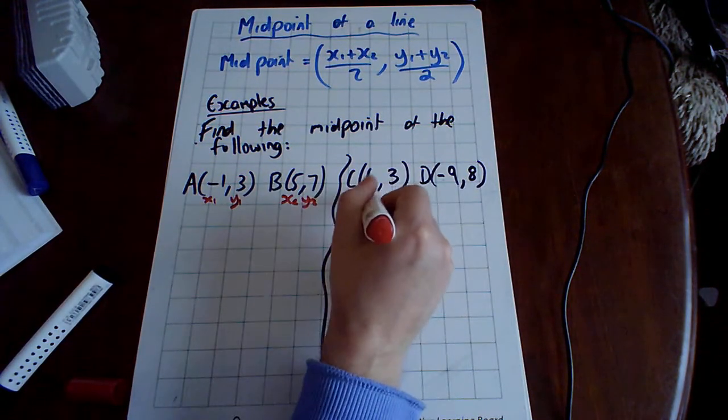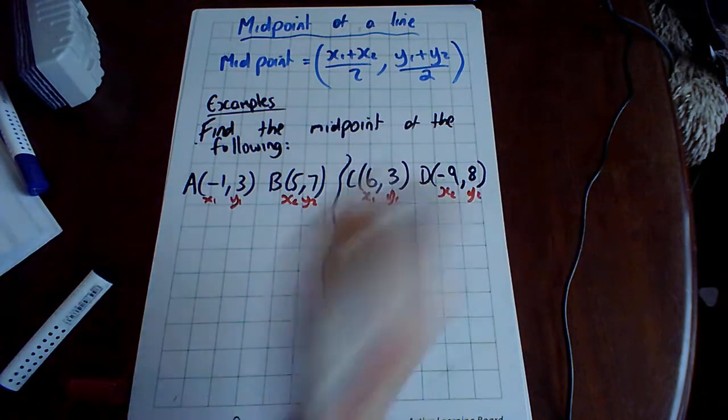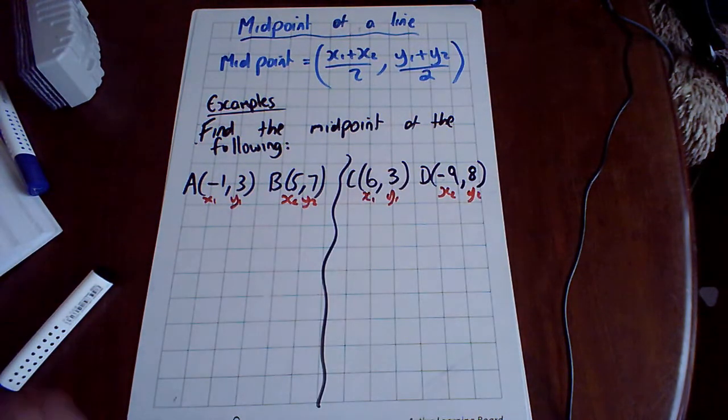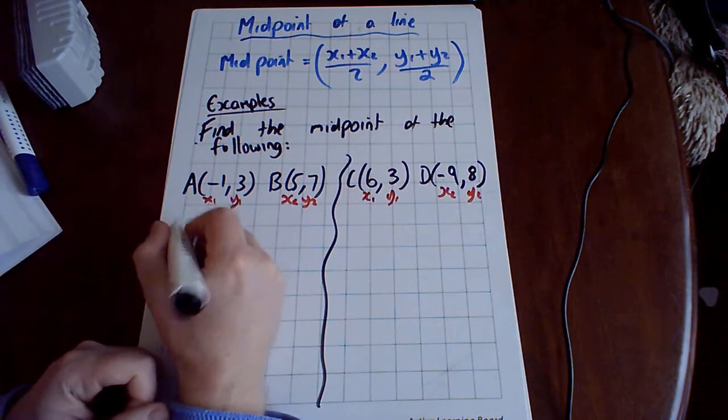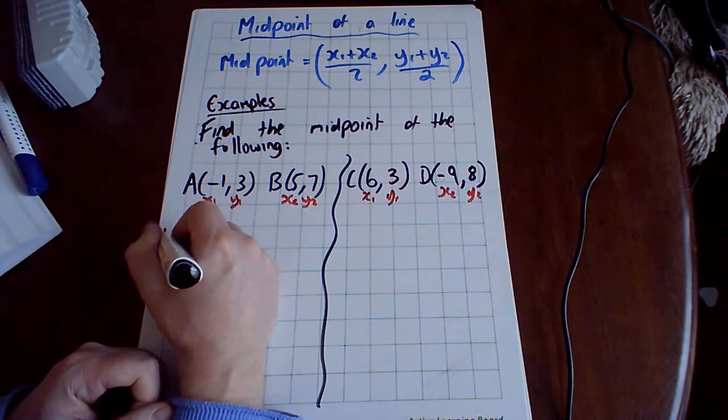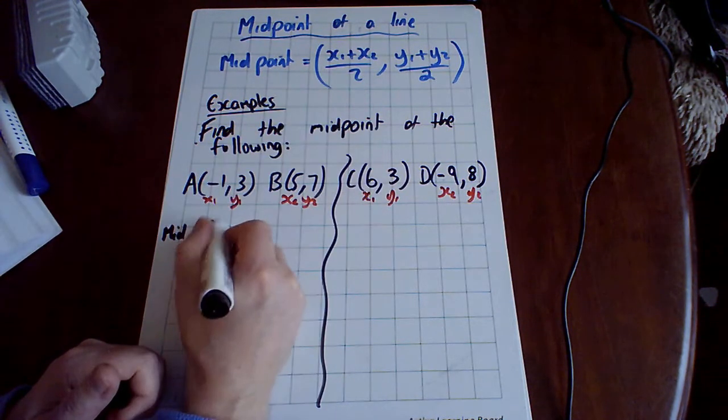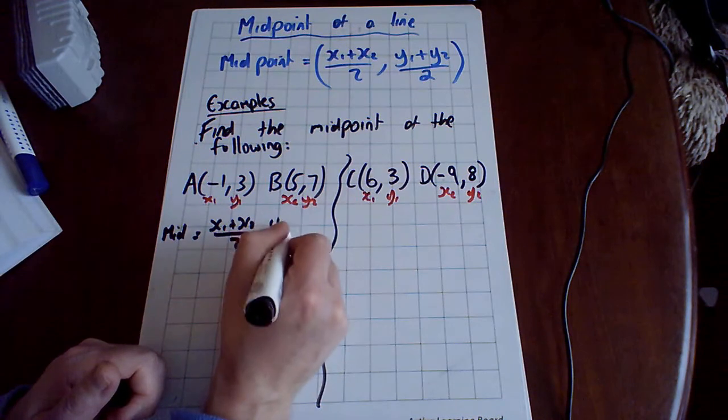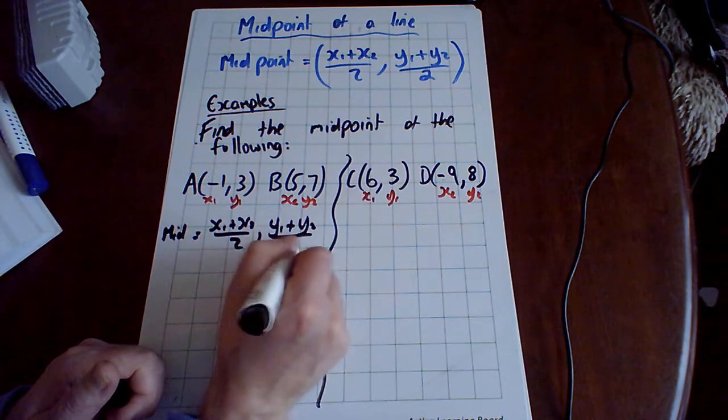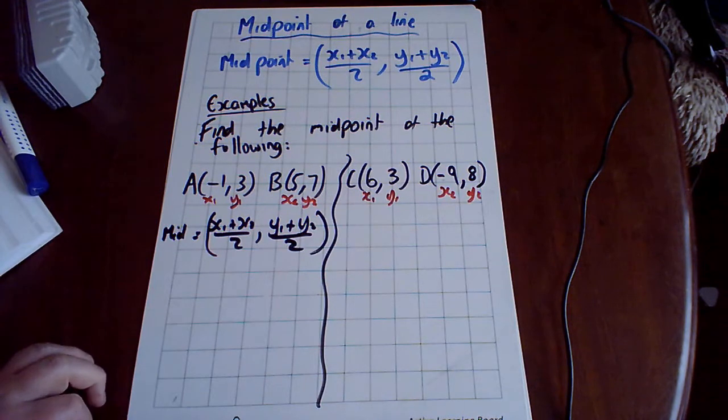I might as well do this while I'm here. x1, y1, x2, y2. It's important to label them so you don't get confused yourself or make mistakes. The formula for midpoint is equal to x1 plus x2 over 2, and y1 plus y2 over 2. It's going to give you a coordinate, so you're going to need an x and a y coordinate.